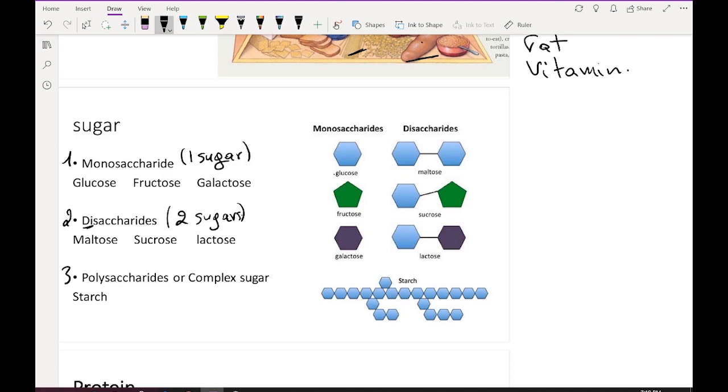For monosaccharides, we have three types: glucose, fructose, and galactose. For disaccharides, we have maltose, sucrose, and lactose.